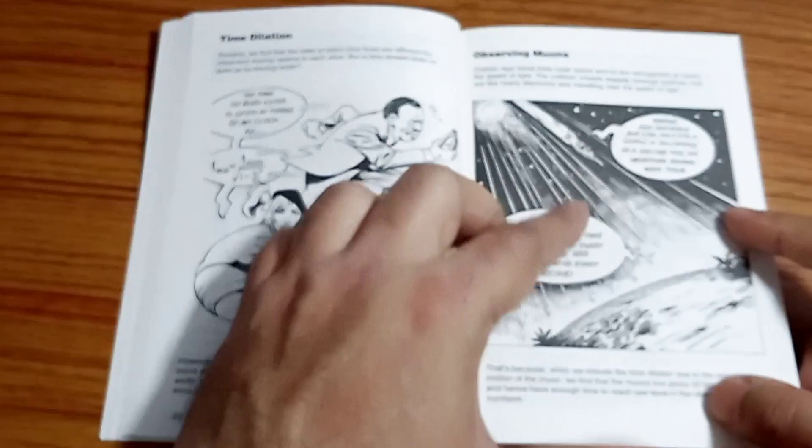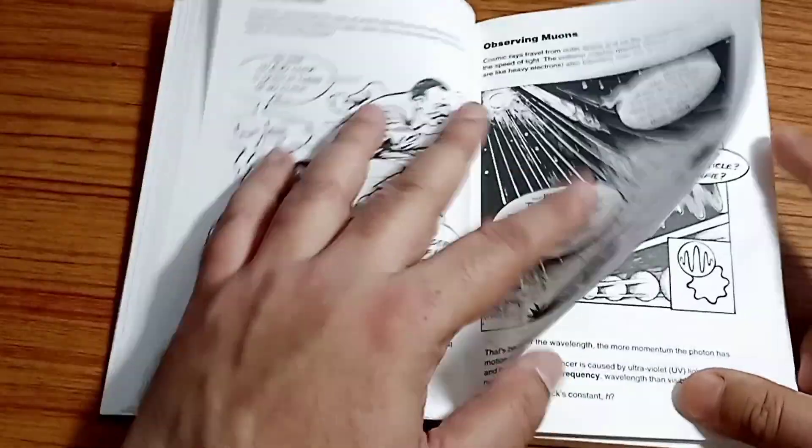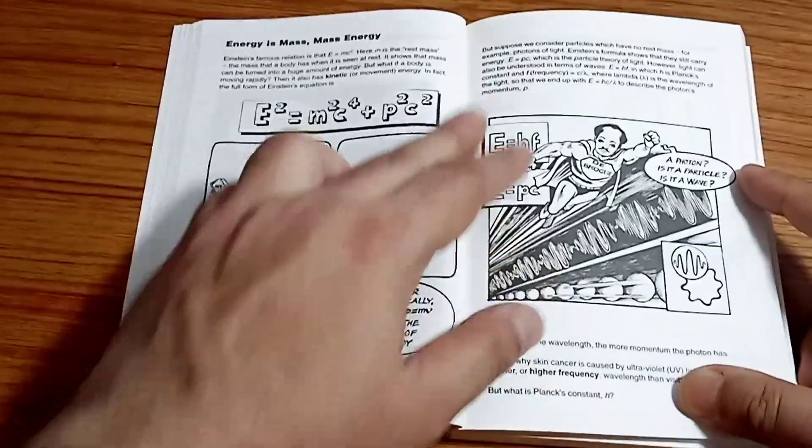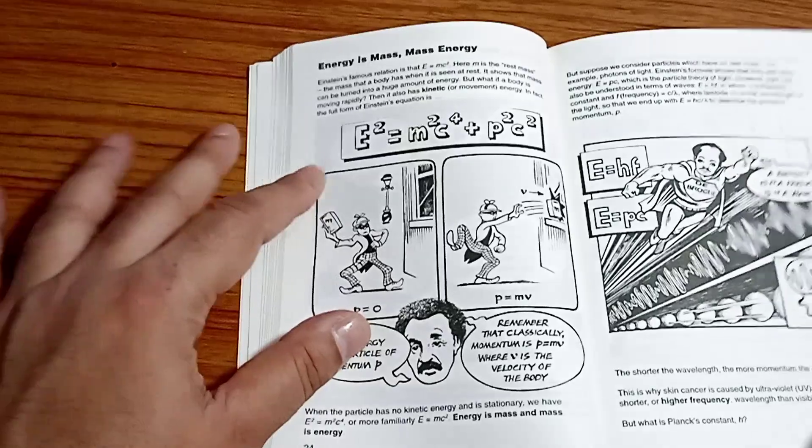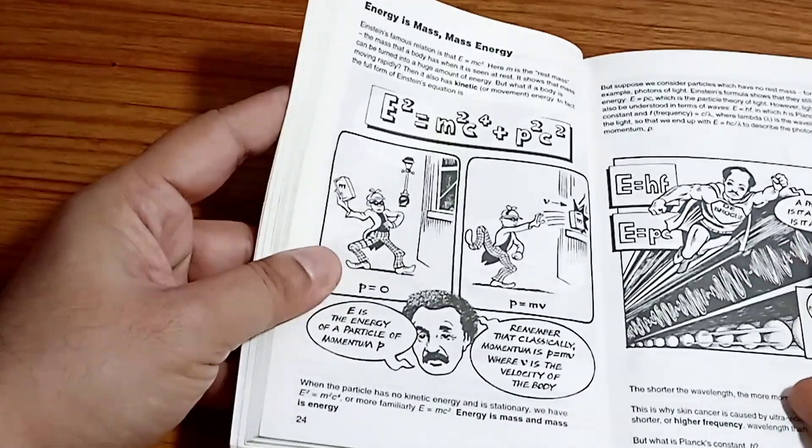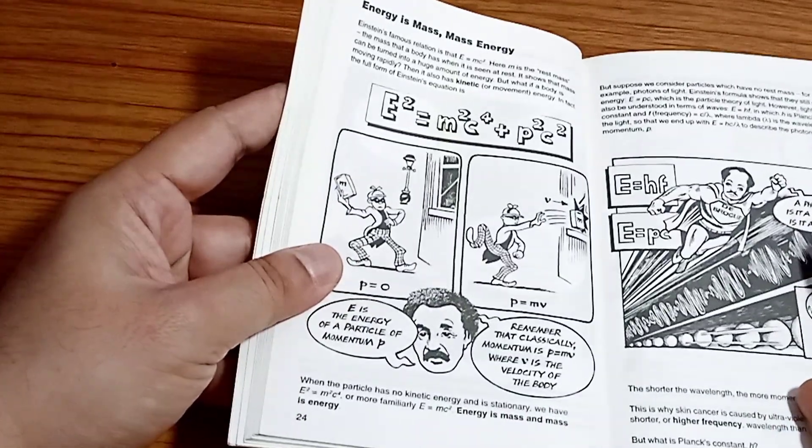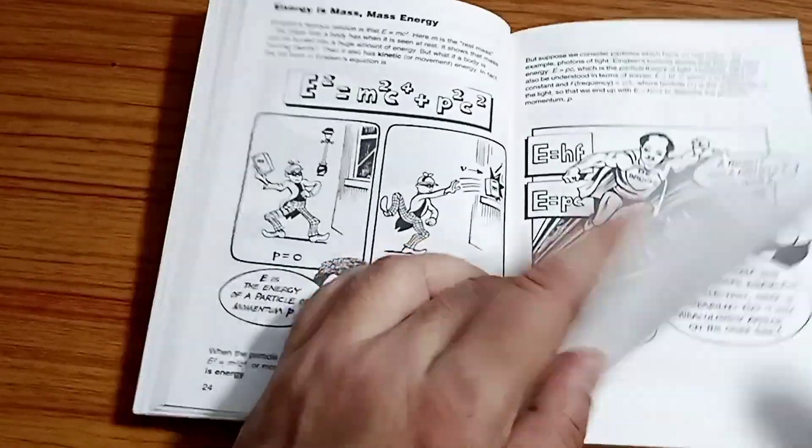This is the observing of muons, the decay of muons, the time dilation. And then here you can see here is the energy is mass and the mass energy equivalence followed by this photon is just a particle.